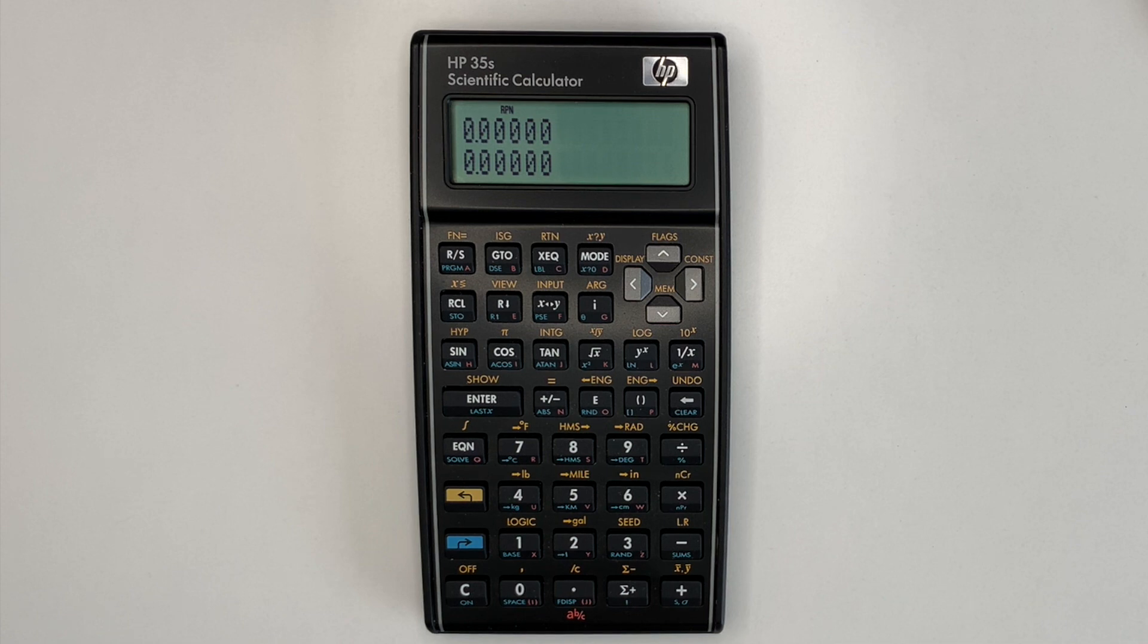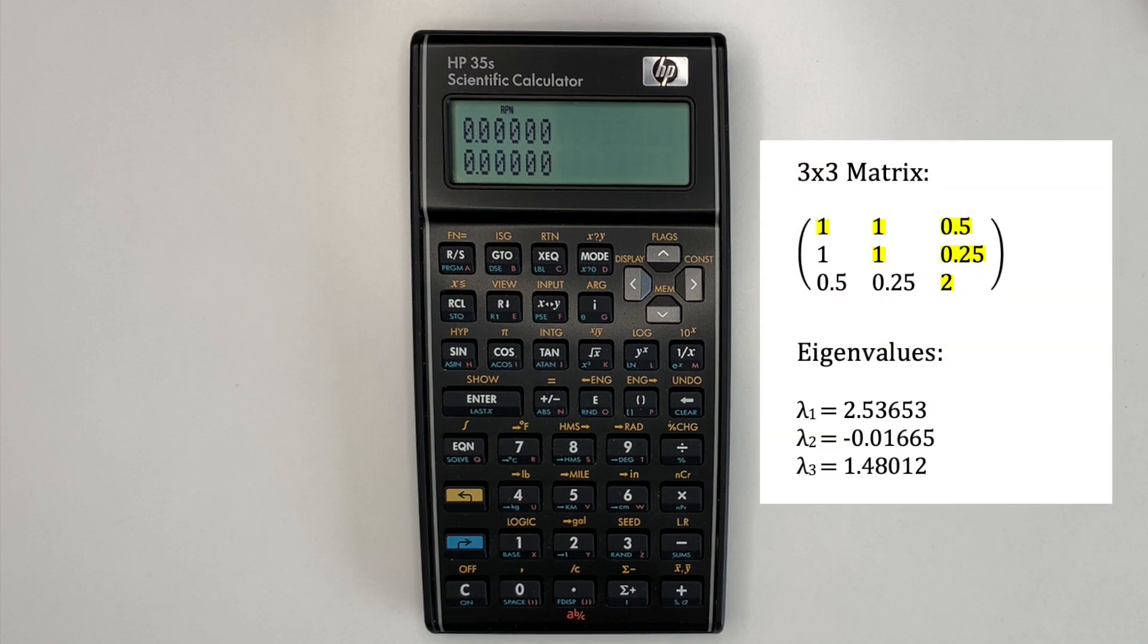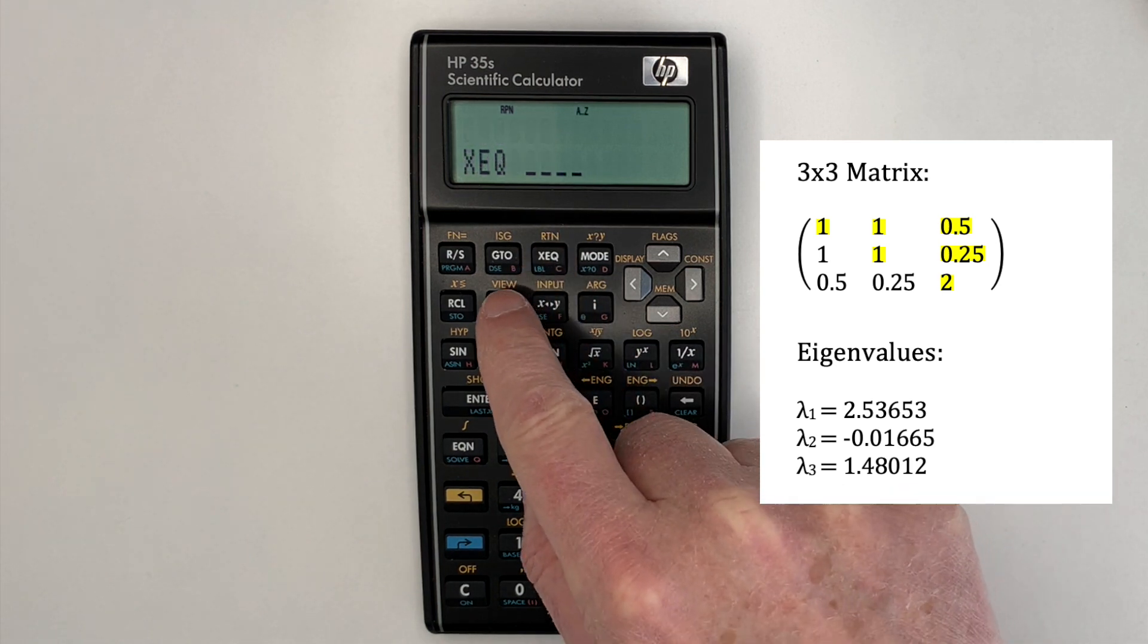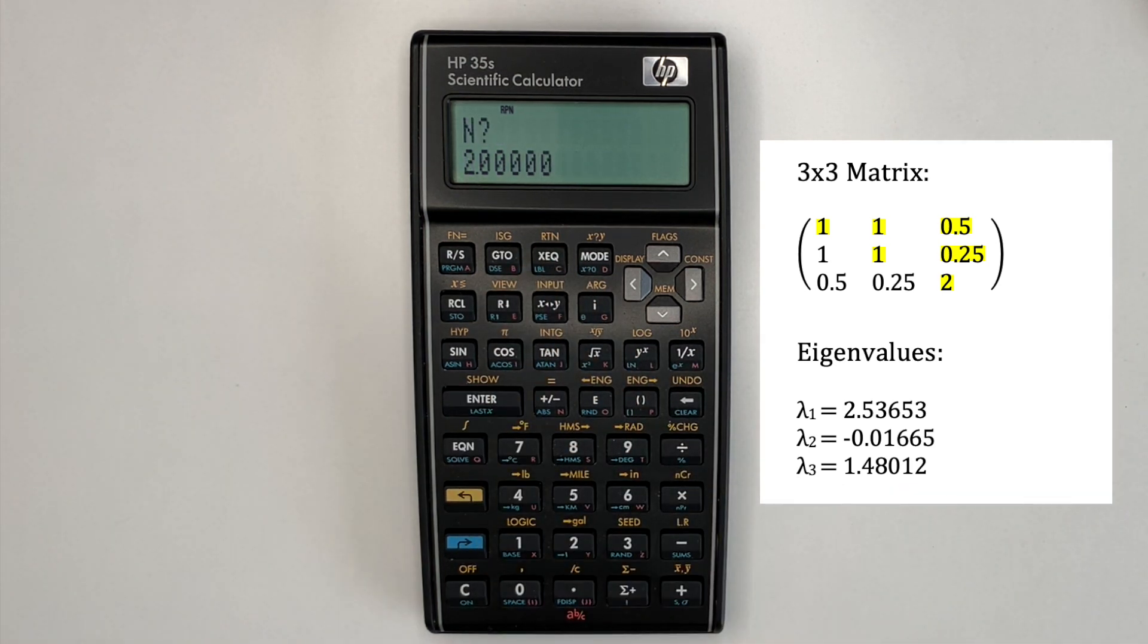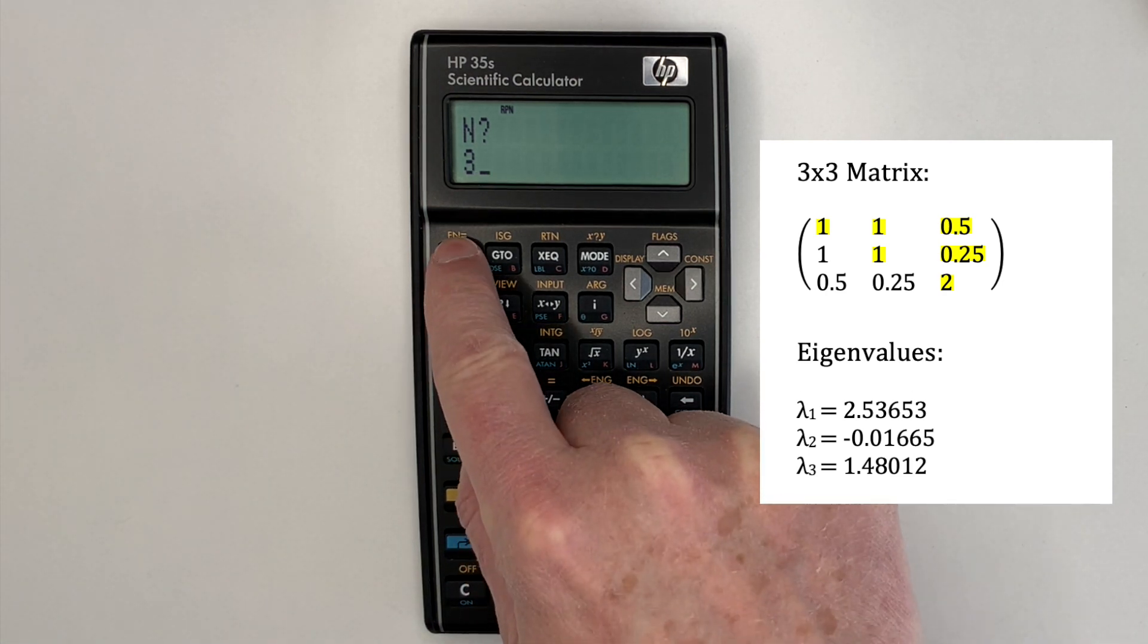The first example is the 3x3 matrix. Execute the program, which is E. And it asks for the matrix size, 1 to 3, run stop.